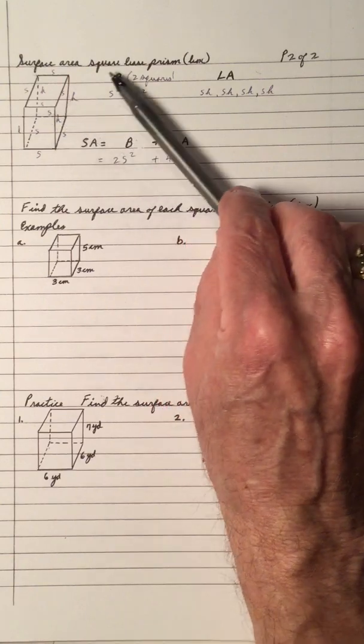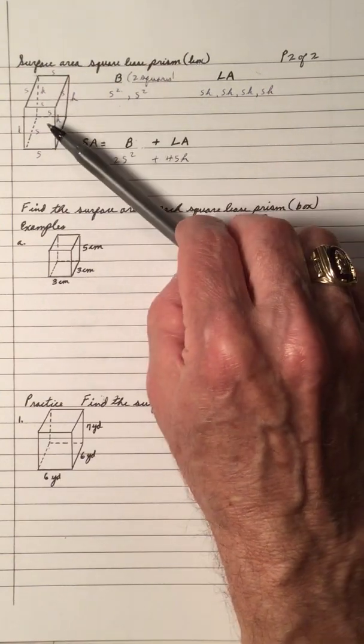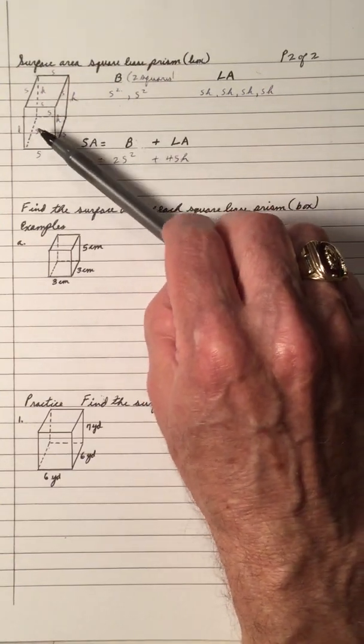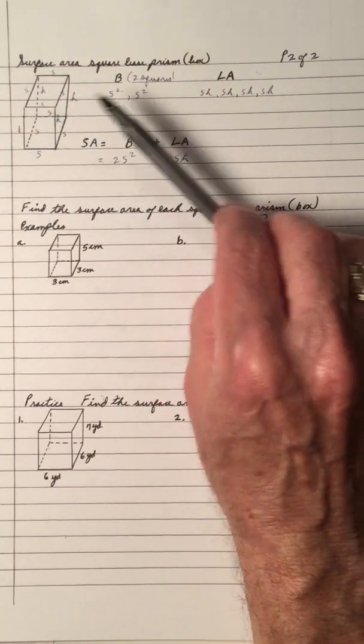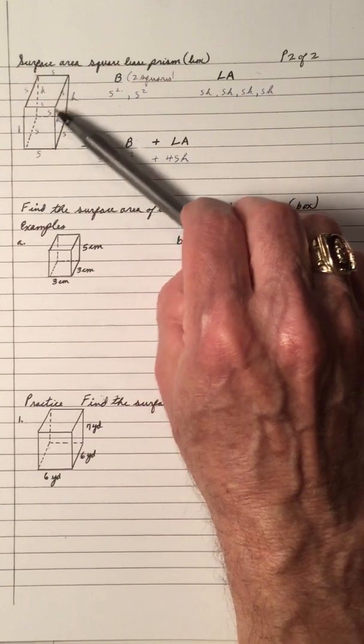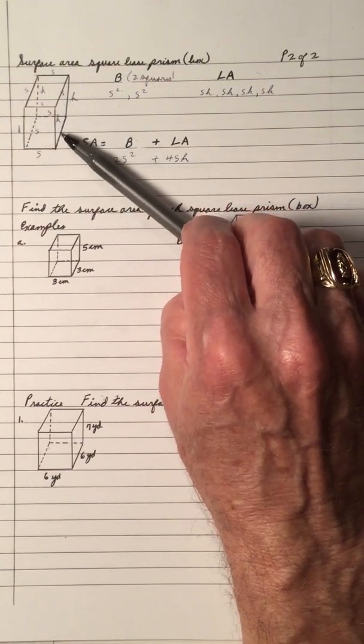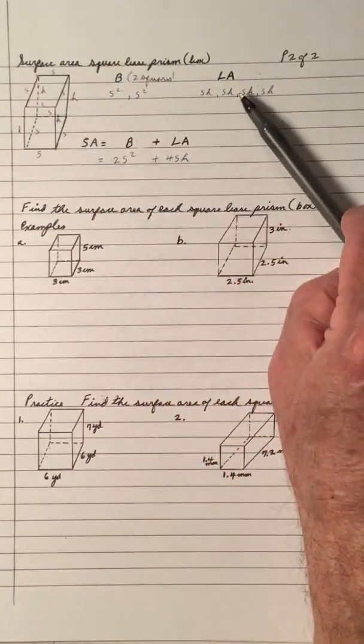Again, in a square base prism, or box, this is a box with a square base. That means the top is a square base, so there's two squares. And all the sides have the same dimensions of S times H, and there's four of them.